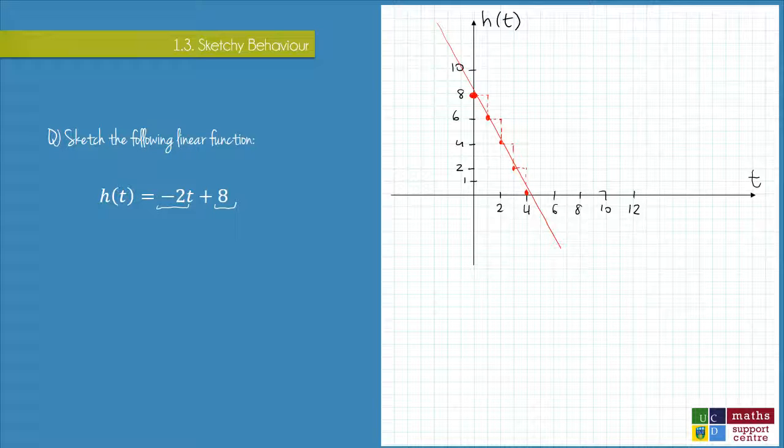And to do this, we say that our output is equal to zero. So in this case, h would be equal to zero along that horizontal axis. So we say 0 = -2t + 8.